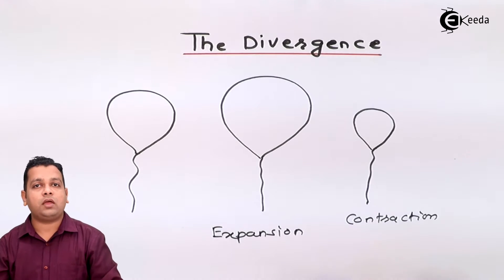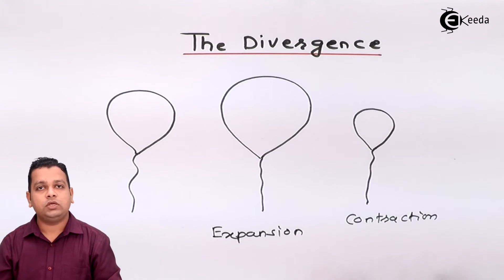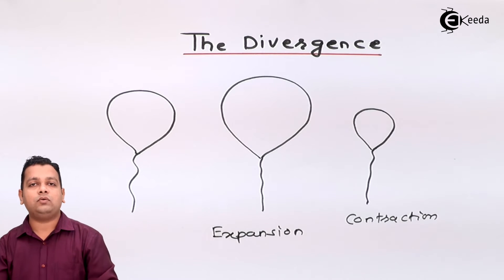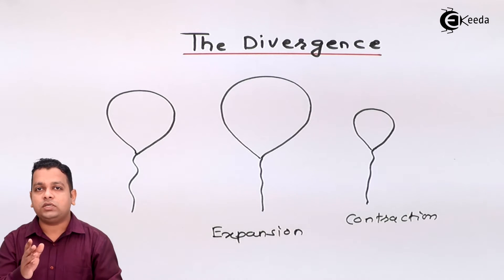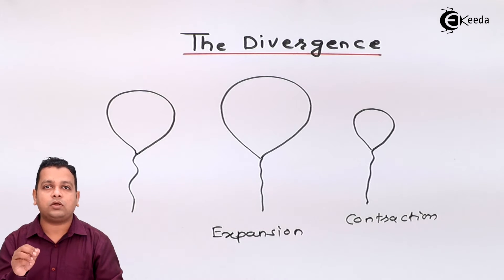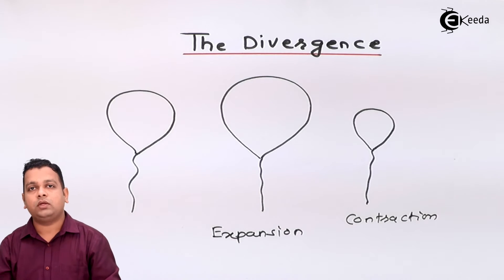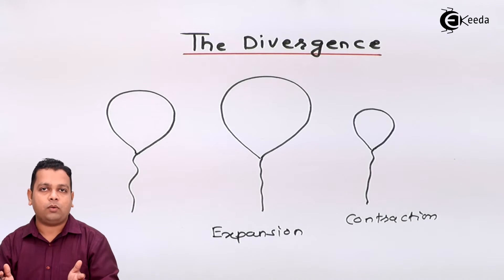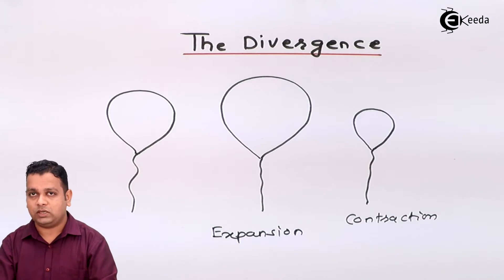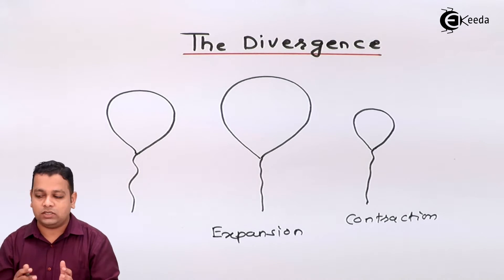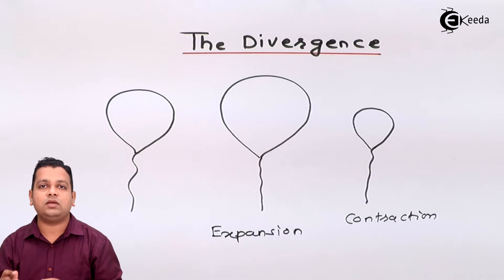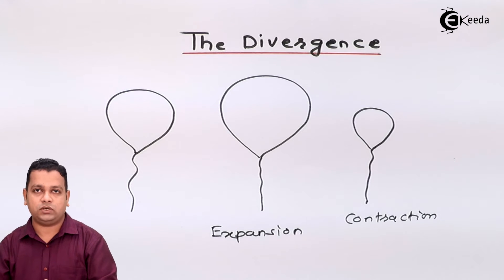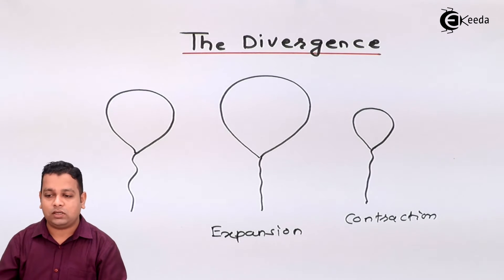The expansion and contraction concepts using the del operator is nothing but the divergence. Here the divergence is the vector operation which is affecting the net volume. Because of this divergence operation, if the volume increases the output is positive — we say positive divergence — and if the volume is decreased, that is contraction, we say it is negative divergence. So now let us have the representation of divergence and further talk about the divergence theorem.